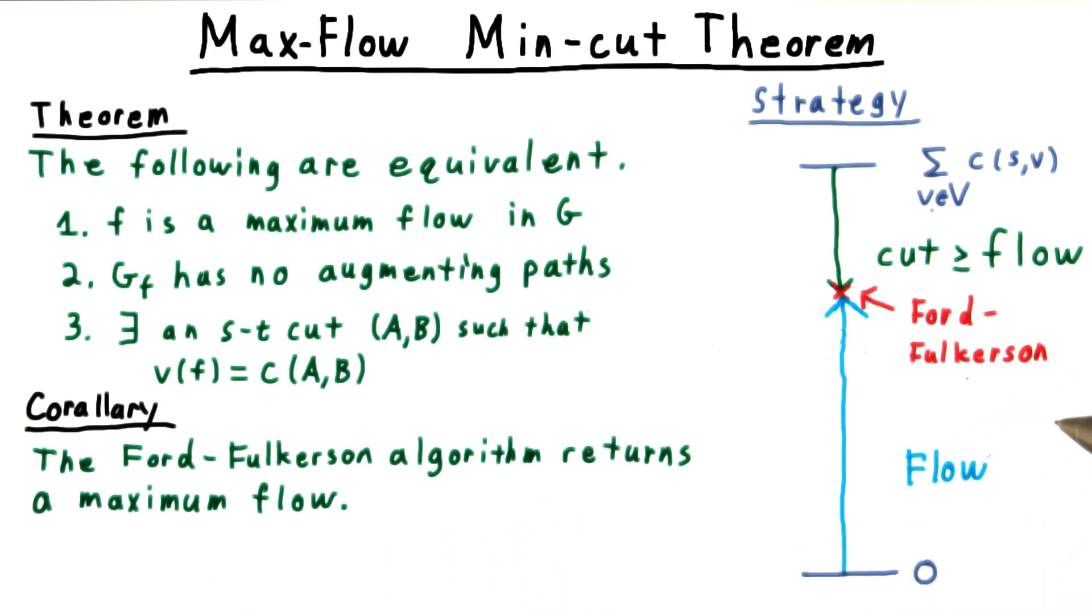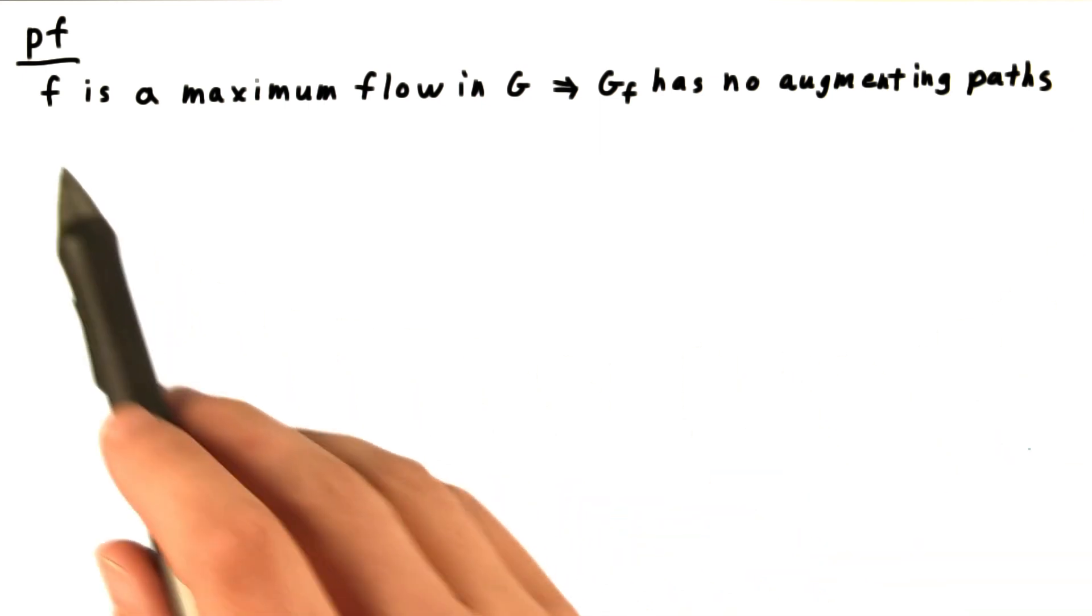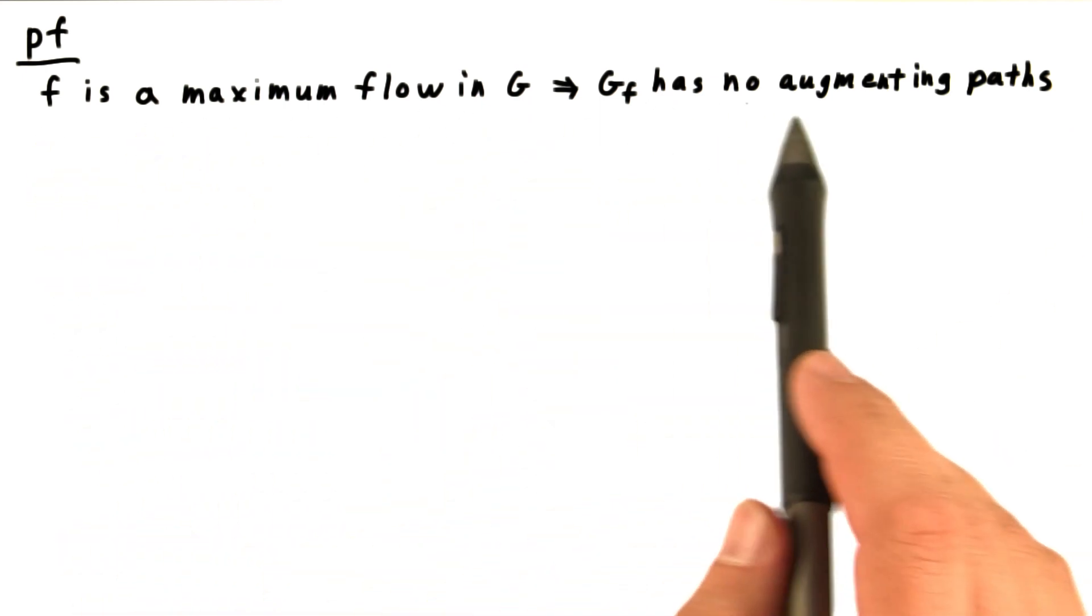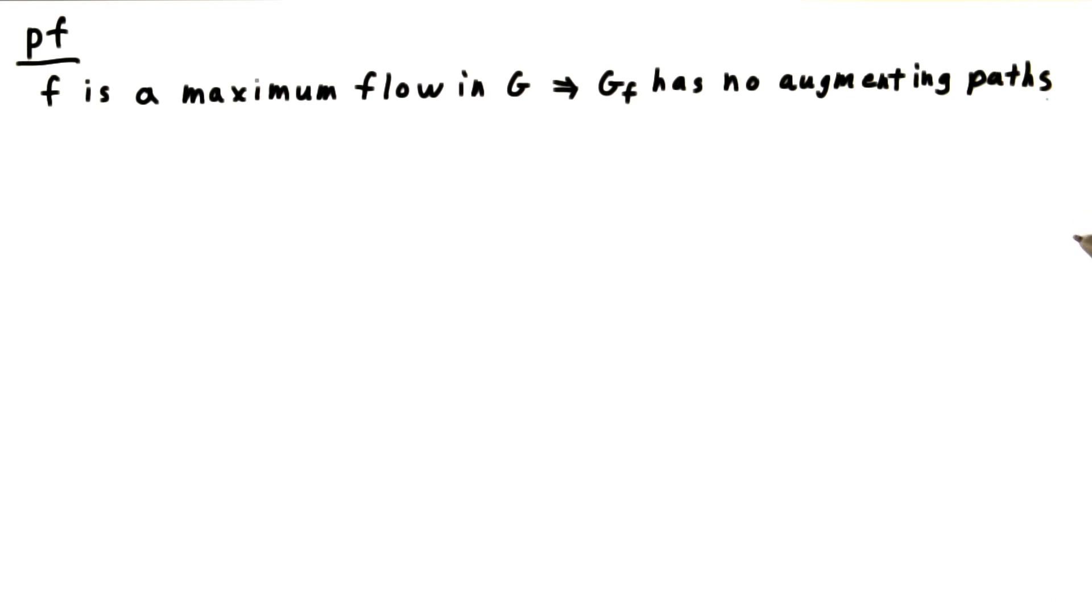Let's see a proof of the theorem. We start by showing that if F is a maximum flow in G, then the residual graph has no augmenting paths. Suppose not, and let F prime be an augmenting flow.